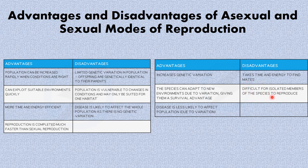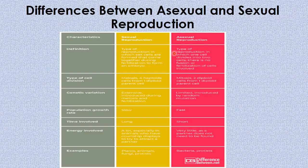Finally, we'll look at the differences between asexual and sexual reproduction. By definition, sexual reproduction is the type in which sex cells are formed that come together during fertilization to form a zygote, whereas in asexual reproduction one cell divides into two cells with no fusion or fertilization involved. Regarding cell division: sexual reproduction involves meiosis, where haploid cells are formed from one diploid parent cell, whereas asexual reproduction involves mitosis, where two diploid cells are formed from one diploid parent cell.